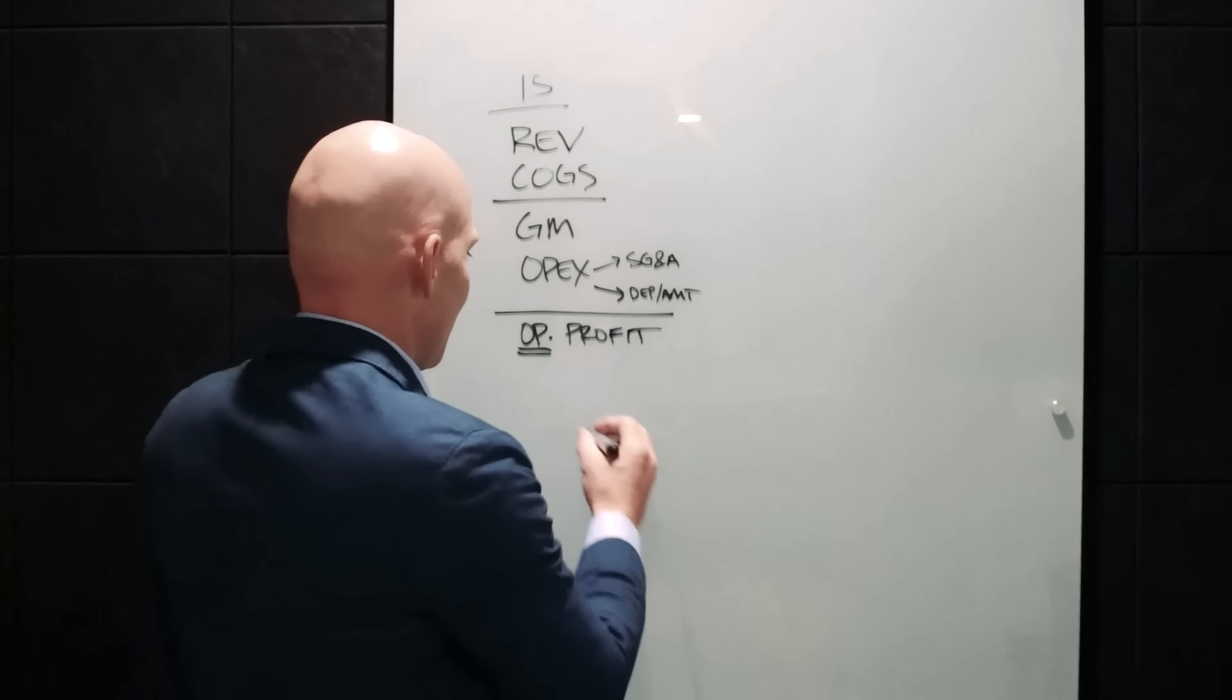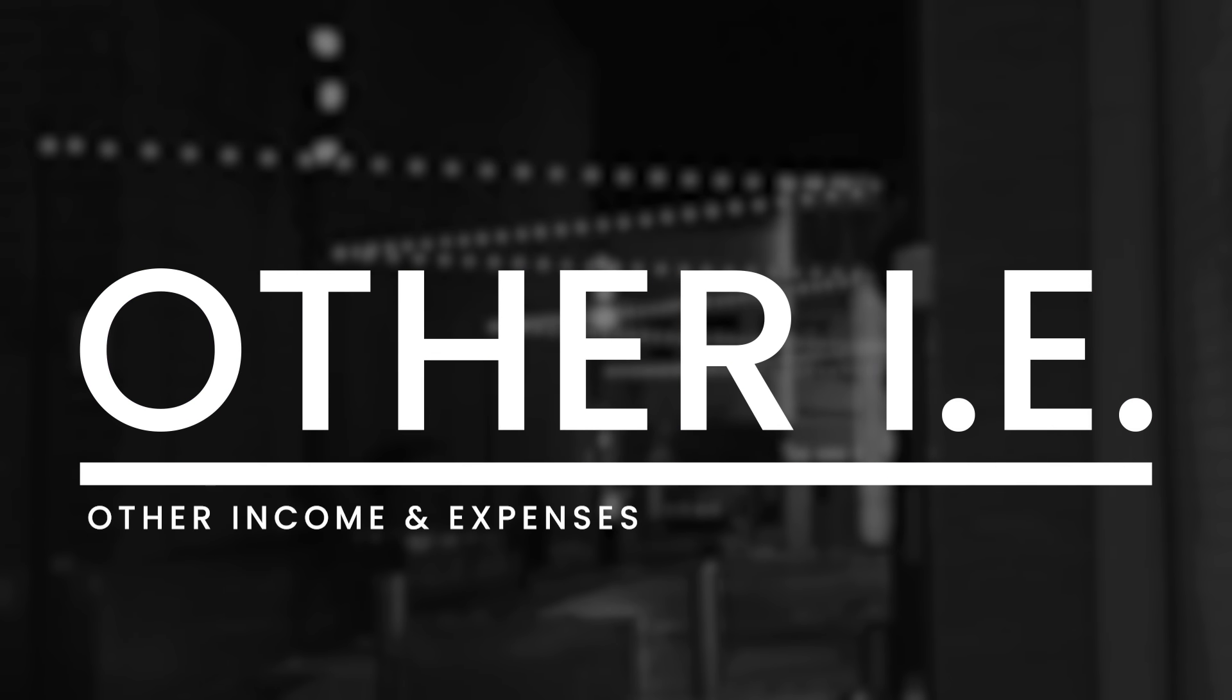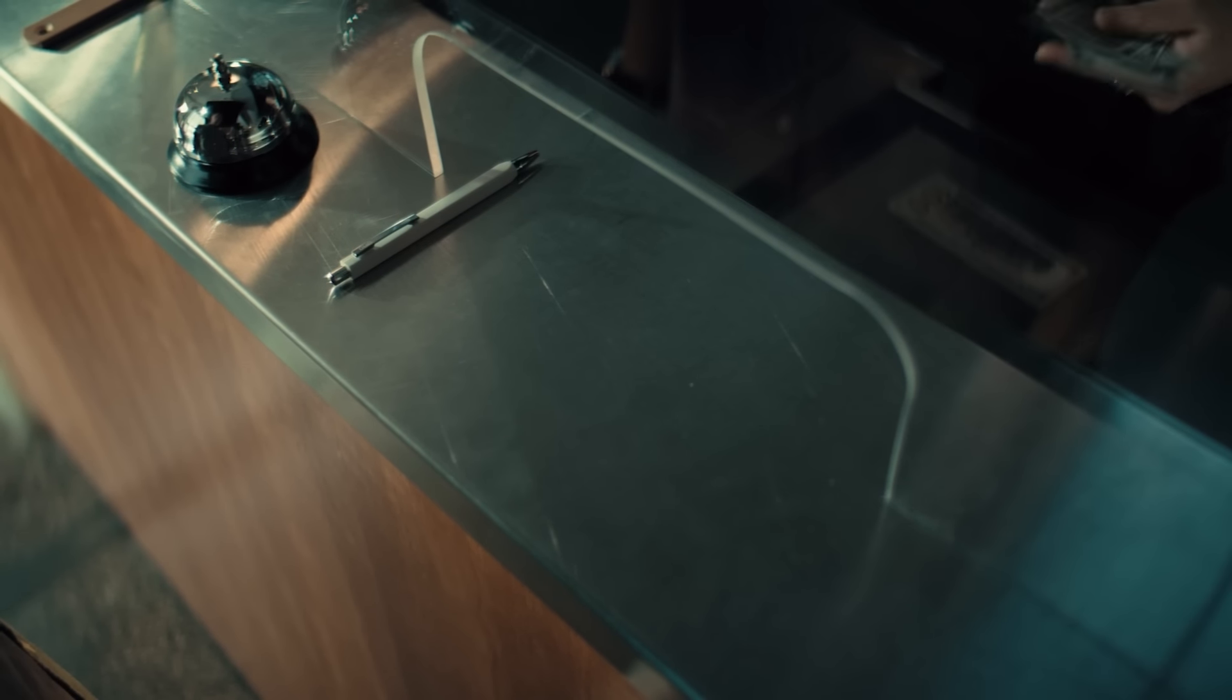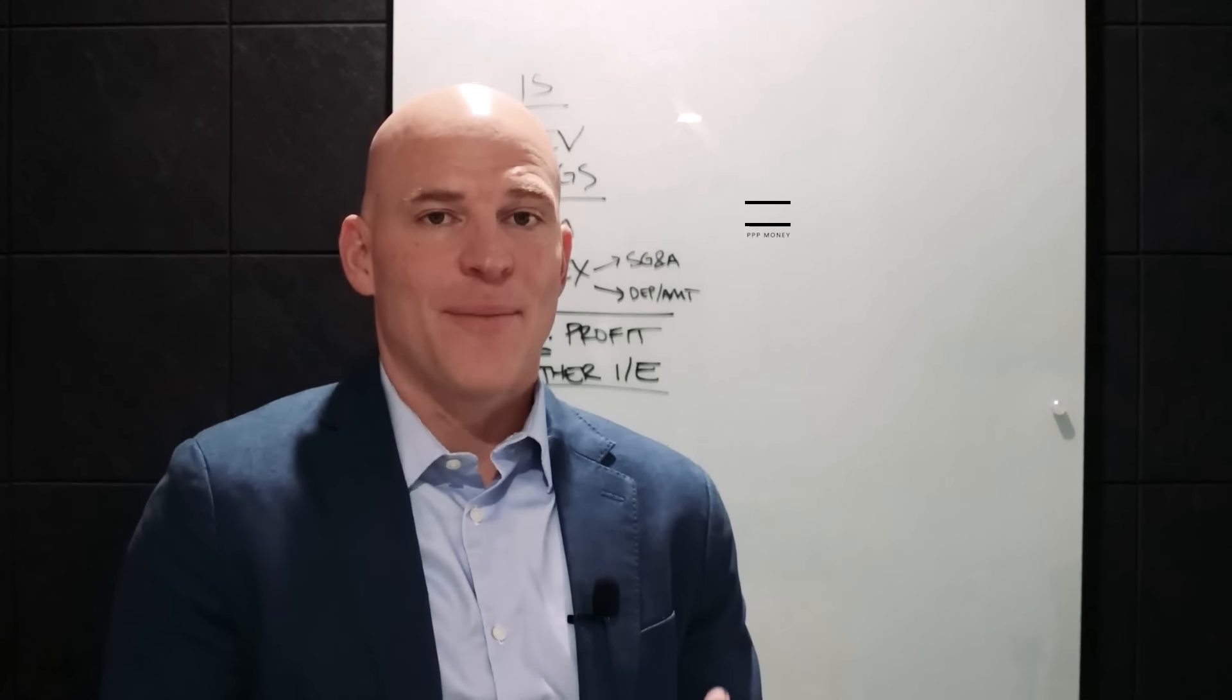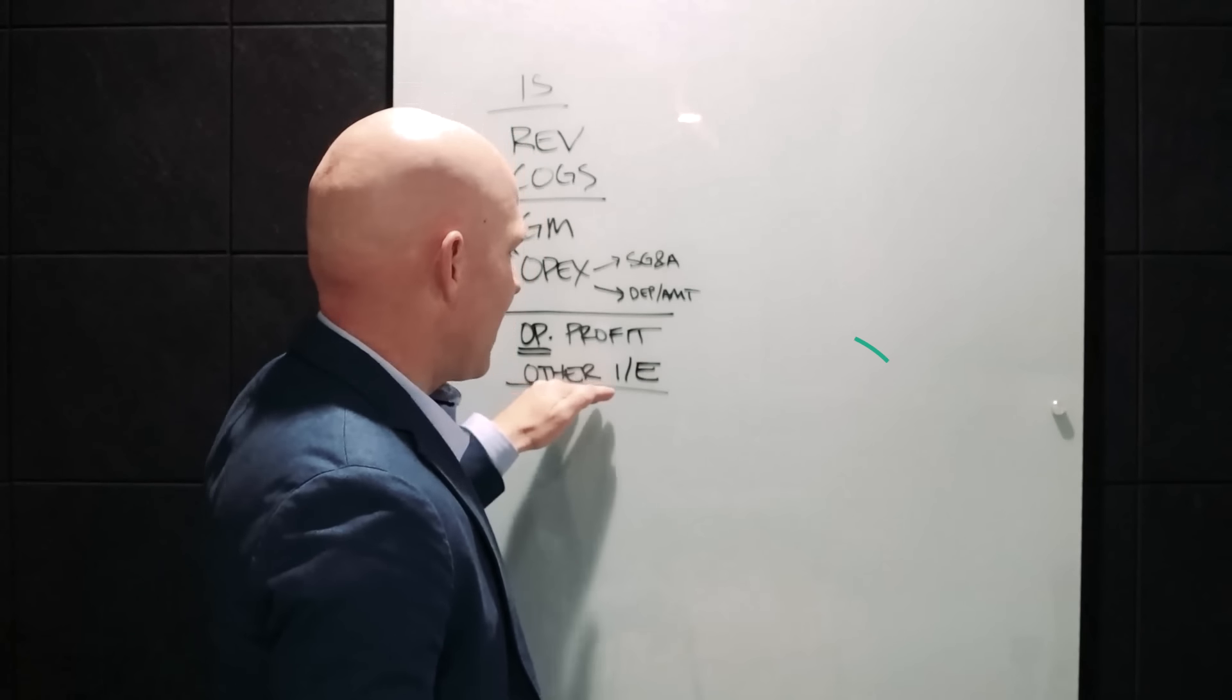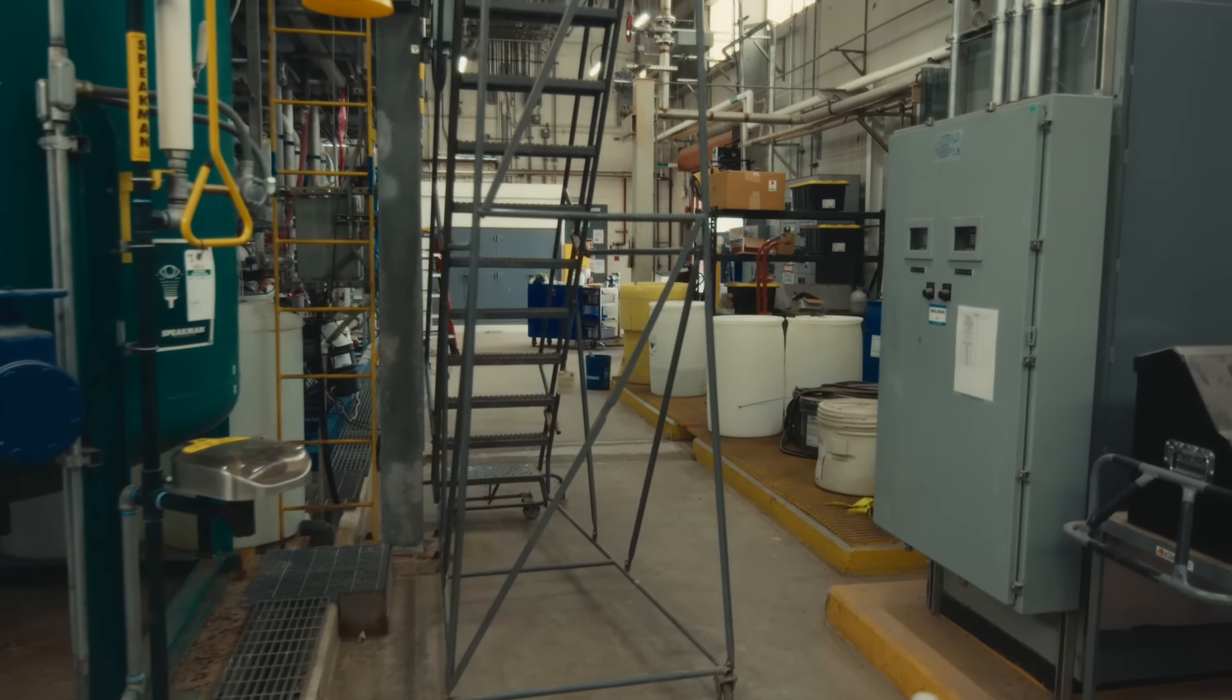This excludes the line items down below in other income and expense. These are items that are not a part of normal operations of the business. For example, other income may include interest income. And unless you're a bank in the business of earning interest income as a revenue source, most companies are going to record interest income down below in other income. Or let's say you're a business and you got PPP money in the United States. You wouldn't want to record that up above in revenue because that's not a part of normal operations. So you would record one-off items down below in other income. Or if you sell a piece of equipment and there's a gain on that piece of equipment, it'd be other income.